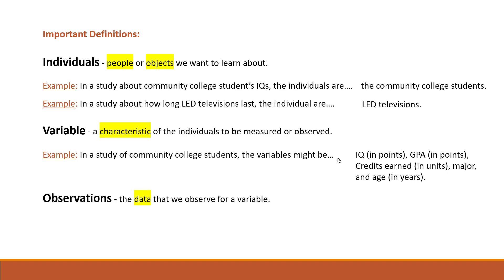And the last definition is observations. Observations represent the data that we observe for a variable. For example, for the variable student's GPA, some observations might be... Of course, we know that GPA varies from student to student. So, what are some possible GPAs that we can observe? It can be 3.8, 4.0, 2.5, and so on and so forth. So, these were the basic definitions that prepare us for studying statistics.